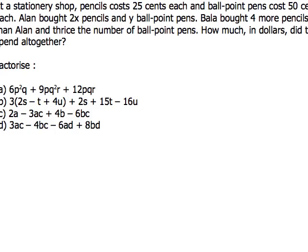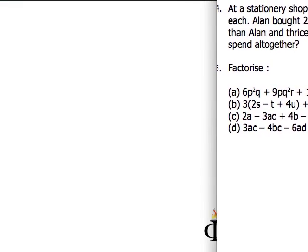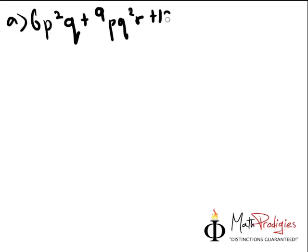So the questions are these. 6p squared q plus 9pq squared r plus 12pqr. I'm going to write it down. 6p squared q plus 9pq squared r plus 12pqr. When it comes to something like this, you have to remember, when factorization is concerned, you have to take step by step. You have to take the terms differently. So take the coefficients first. Coefficients are the numbers in front. So what is the common factor or what is the highest common factor in this case?